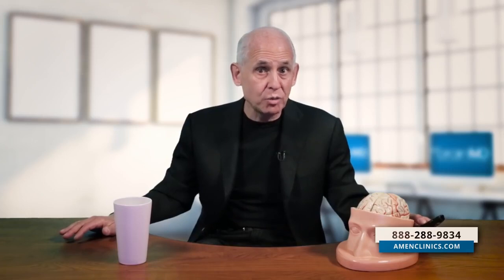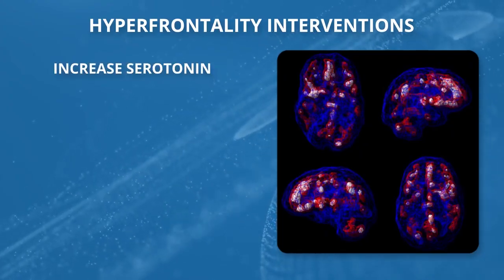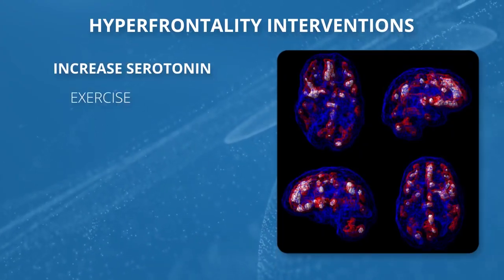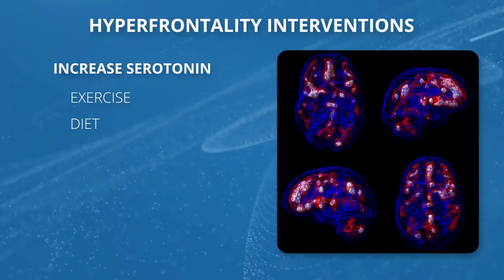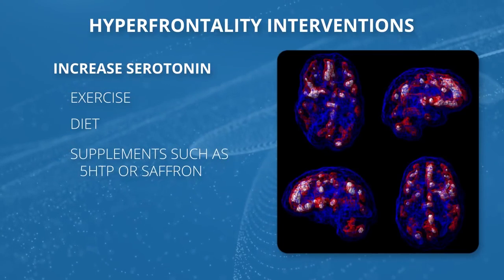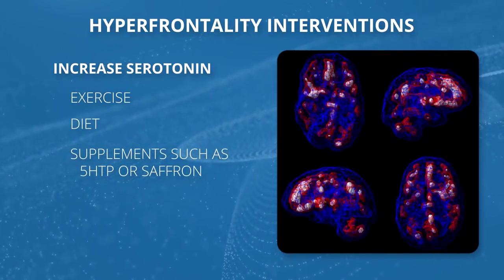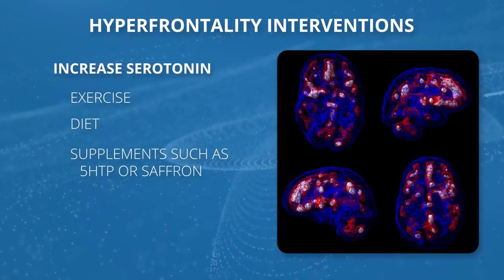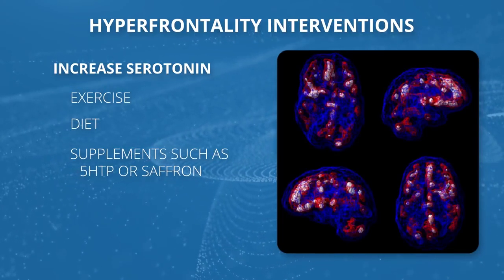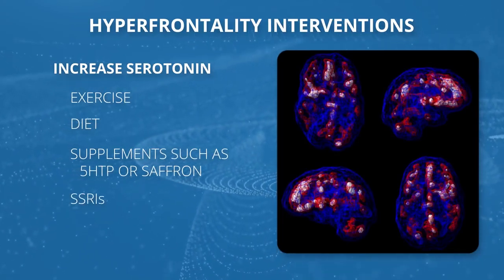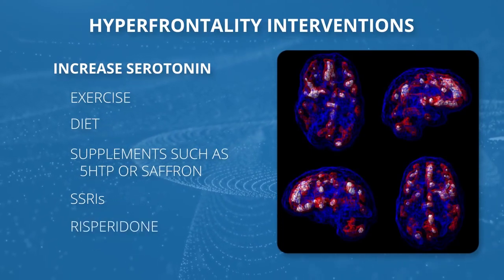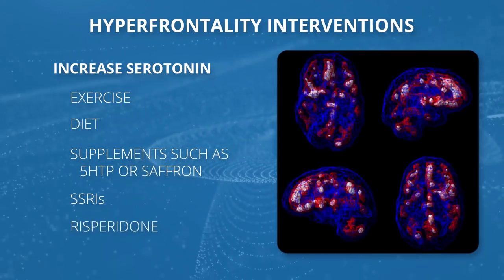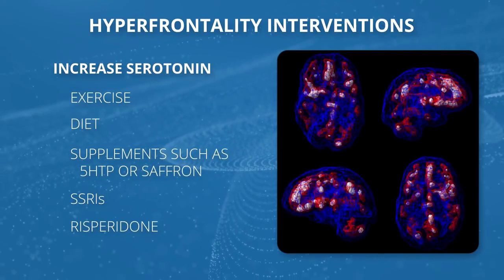When we see the front part of the brain working too hard, we want to raise serotonin. We do that with exercise, certain kinds of diets, supplements such as 5-HTP and saffron. If it's more serious, we might use an SSRI. If there's a psychotic process, we'll also consider Risperdal or Zyprexa to help calm things down.